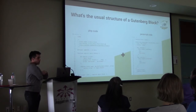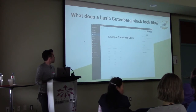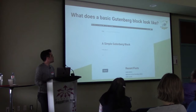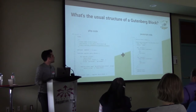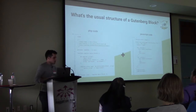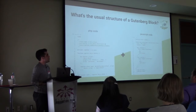Now let's start building. That block I showed — once you publish, that's what you see. That Gutenberg block is just this code: one PHP file and one JavaScript file. That's the bare minimum for a block.